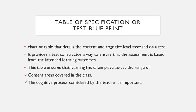It is a chart or table that details the content and cognitive level assessed in a test. It provides a test constructor a way to ensure that the assessment is based from the intended learning outcomes. It also ensures that learning has taken place across the range of content areas covered in the class and the cognitive processes considered by the teacher as important. In other words, the table of specification is a guide that assures the teacher and the test takers that only those covered or discussed in class will be included in the test.